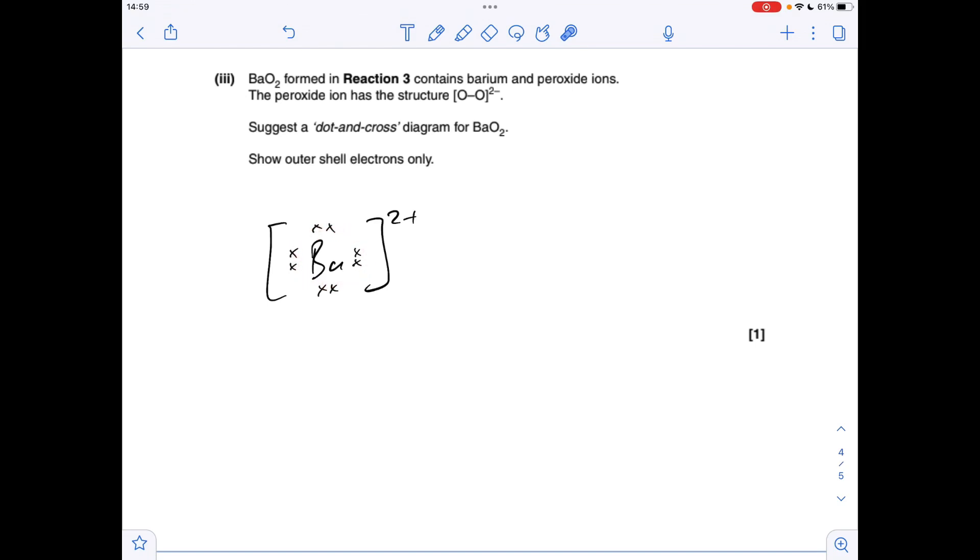You can have an empty shell there if you want. And for the peroxide ion, I'll explain how this one works, because it's not as straightforward as the barium 2 plus ion. So I'm using this diagram here. So we've got two oxygens, two oxygens, with a single covalent bond between them.